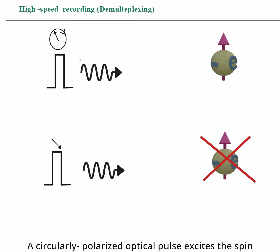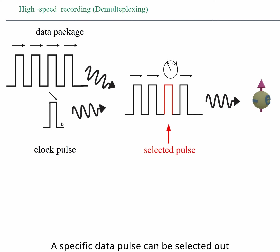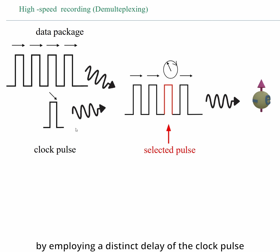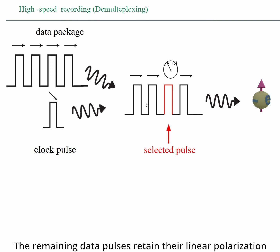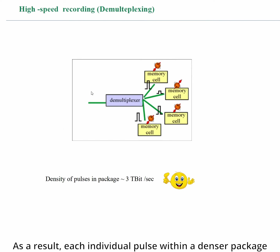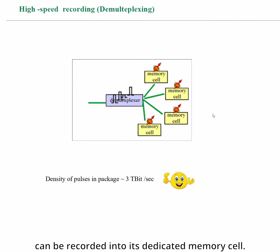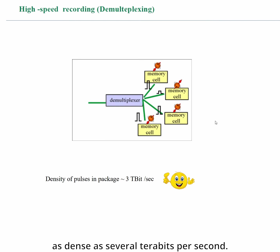In this recording method, the data and clock pulses are combined to form a circularly polarized pulse which excites spin. A circularly polarized optical pulse excites the spin, and a linearly polarized optical pulse does not. A specific data pulse can be selected from a series of data pulses by employing a distinct delay of the clock pulse. At a particular delay, only the second pulse is circularly polarized, so only the data encoded in that pulse is recorded into the memory cell. The remaining data pulses retain linear polarization and do not affect recording. Each individual pulse within a dense package can be recorded into its dedicated memory cell, enabling effective recording of data packages as dense as several terabits per second.